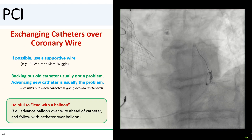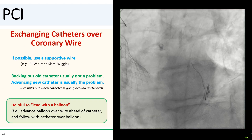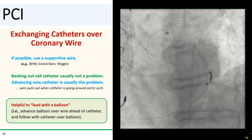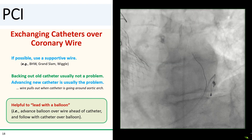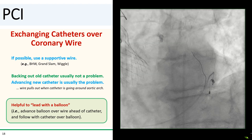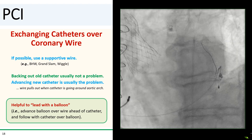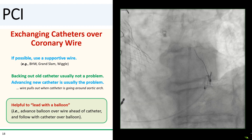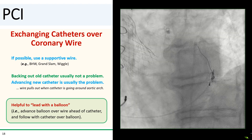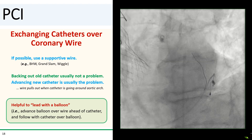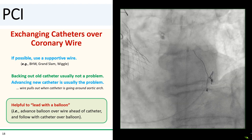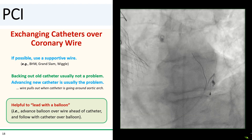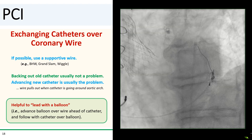Exchanging catheters over coronary wires is not often done, but it is occasionally necessary. If possible, use a supportive wire like a BHW, Grand Slam, Ironman, or Wiggle. In our case, we already had a BHW wire in place, so we were in good shape.